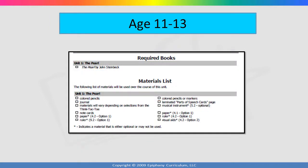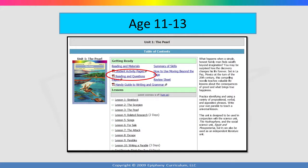Before you start a unit, you should check the required books and materials page to make sure that you have access to all the materials needed for the next three weeks. Many families find it helpful to keep a box or crate with all the materials gathered for the unit in one place. This saves you from having to gather materials each day or even during a lesson. Most items can be found in common stores like Walmart or a craft store. If you are using the online version, you should also download and print the student activity pages and reading and questions pages for the unit before you get started.